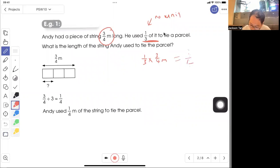Or you can draw a model. Start with 3/4, take 1/3 of it by dividing by 3, which gives you 1/4. Andy used 1/4 meter to tie the parcel.